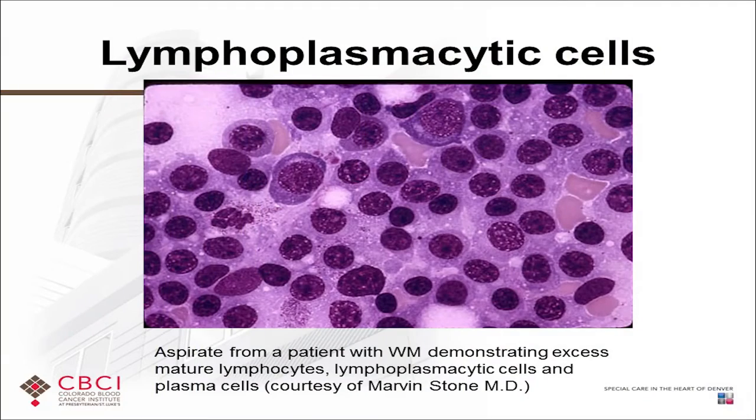Under a microscope, bone marrow biopsy cells look blue or purplish. When I was learning, I was told 'blue is bad.' Usually a bone marrow biopsy shows a great mix of cells — stem cells, white cells, red cells, and platelets. But often in lymphoma, you see a predominance of one kind of cell, which is very evident even to those who have never looked at a bone marrow biopsy before.